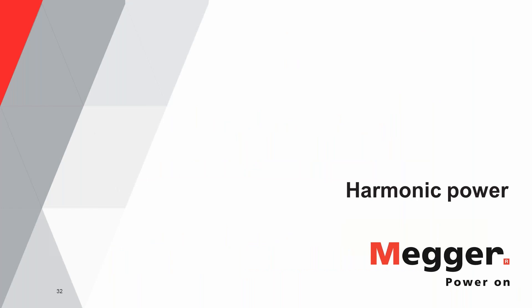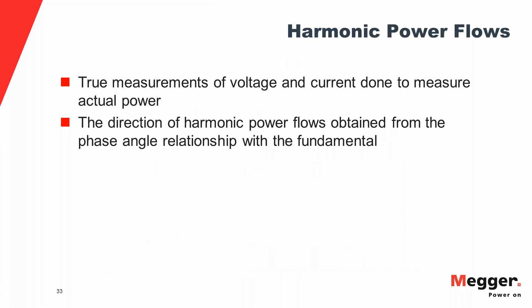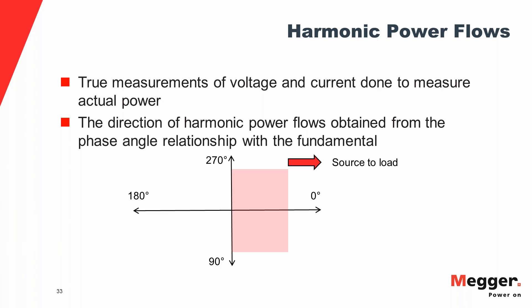The next section is on harmonic powers. Power is measured using true RMS values of voltage and current. For individual harmonic powers, the direction of flow differs from harmonic to harmonic — it's not the same as for fundamental power. The direction of power flow is determined by the phase relationship of the harmonics with the fundamental. If the phase angle difference lies between 90° and 270°, the direction is from source to load. If the phase angle difference falls in the negative quadrant, the direction is from load to source.